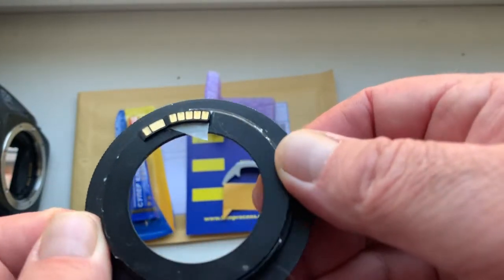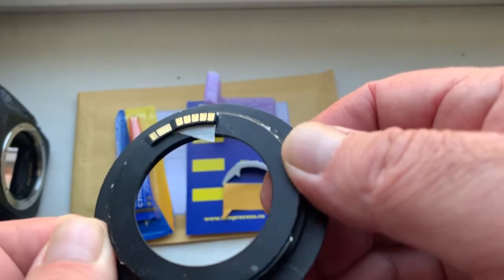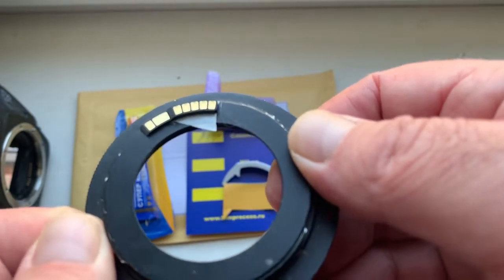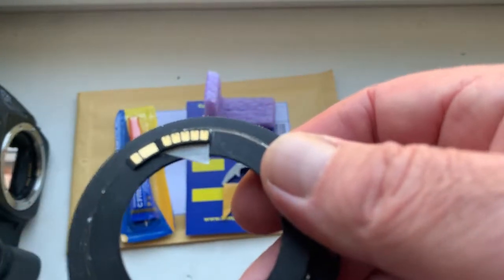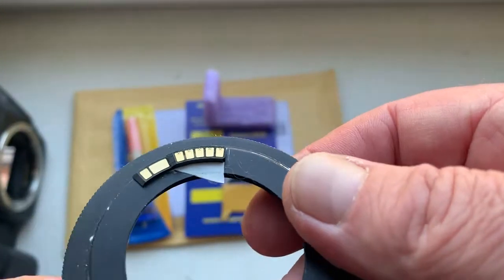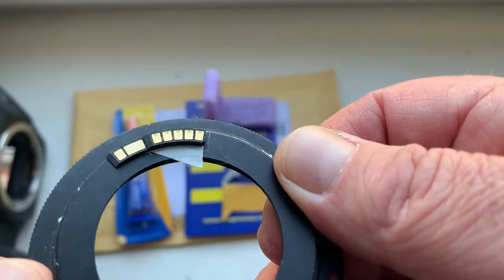My advice is to first install the chip on the bayonet of your Helios 40 model 2 using double-sided adhesive tape, as I installed on my testing adapter.